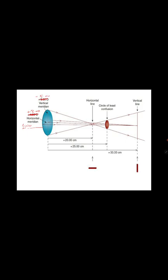As we know in optics, with plus three and plus five, the first more powerful vertical meridian forms a horizontal focal line here. The second, weaker horizontal meridian, comes to focus and forms a vertical line. So simply: the vertical meridian forms a horizontal line, and the horizontal meridian forms a vertical line. The space between these two lines is called Sturm's interval.